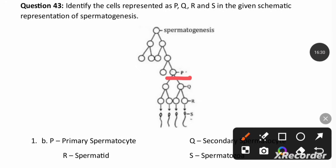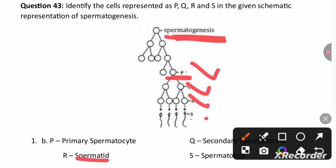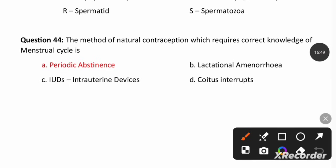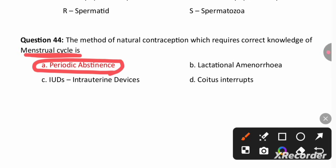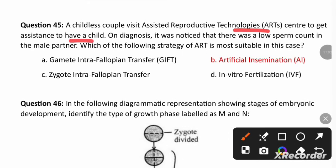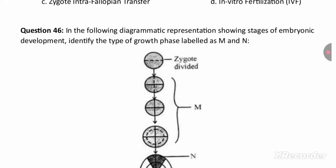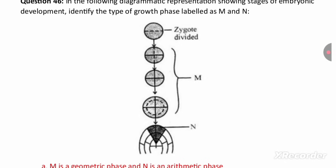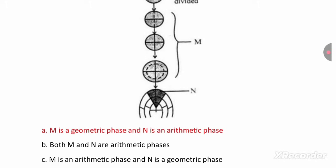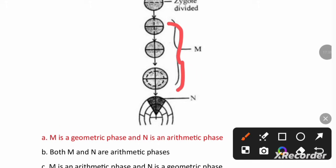During spermatogenesis: P is the primary spermatocyte, Q is the secondary spermatocyte, R is spermatids, and S is spermatozoa or sperms. The method of natural contraception requiring correct knowledge of the menstrual cycle is periodic abstinence. Regarding embryonic development growth phases: M is the geometric phase and N is the arithmetic phase, because in stage M every progeny cell retains the capacity to divide with no differentiation, and division occurs in a 2N manner.